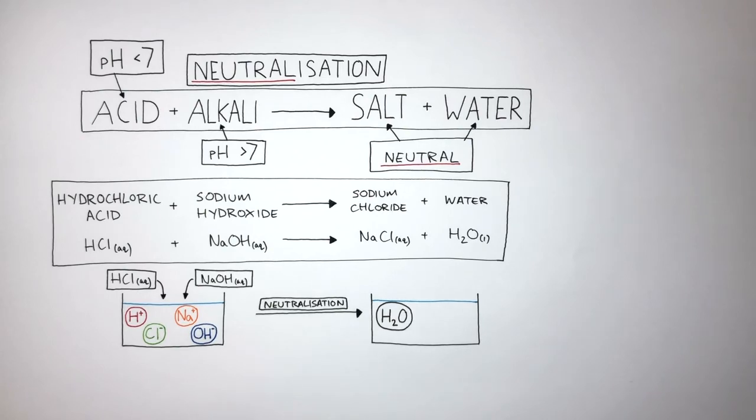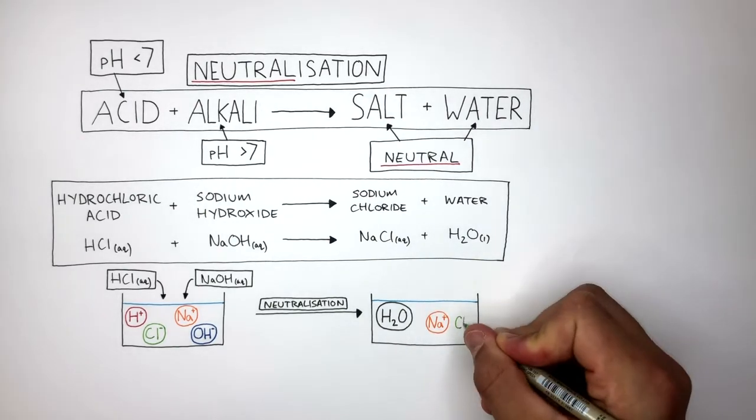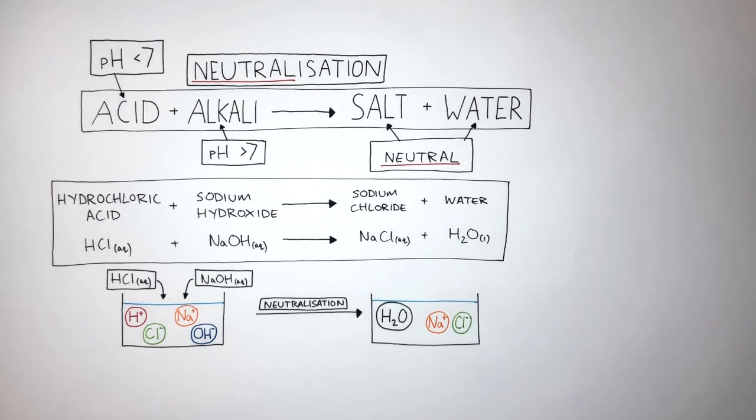Then dissolved in solution are the sodium ions and chloride ions forming aqueous sodium chloride solution. We can now use an ionic equation to show what's happened in this neutralization reaction between an acid and an alkali.